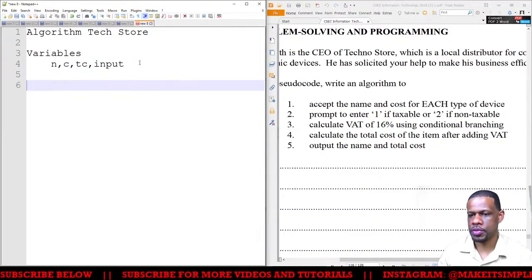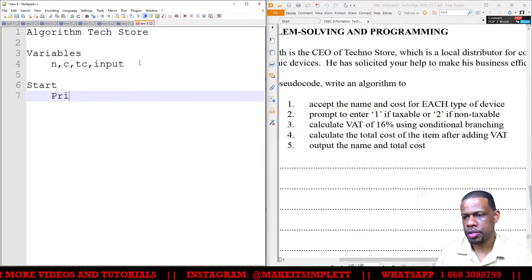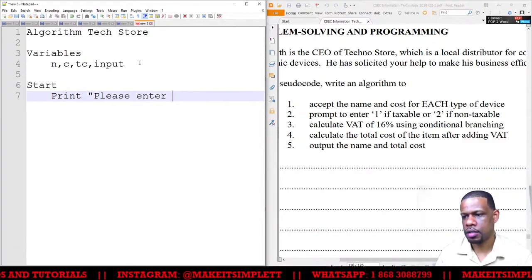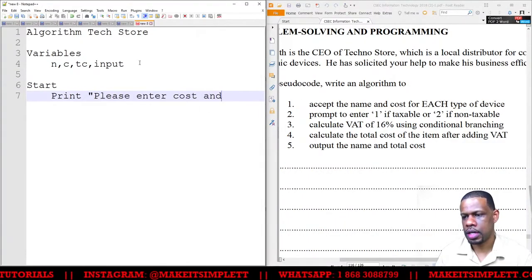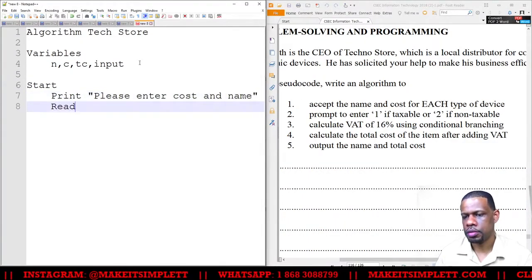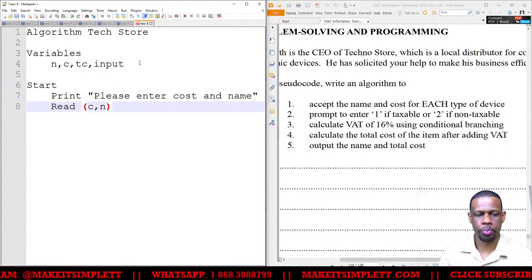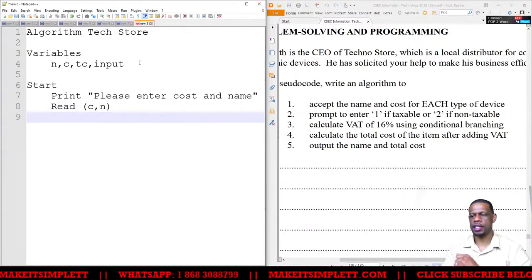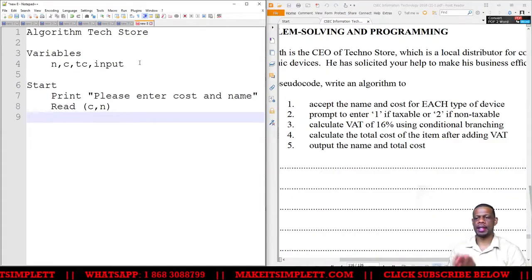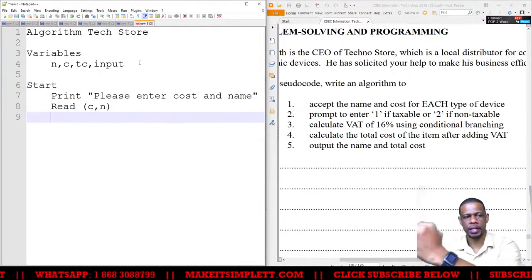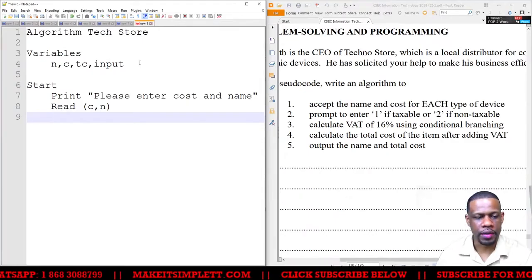So here's what I have to do. Start. Print 'Please enter cost and name'. Read c and n. When you're prompting, you have to say 'please enter cost and name' and then you have to read the cost and the name. After you read cost and name, we now have to ask the user to enter 1 if taxable or 2 if non-taxable.